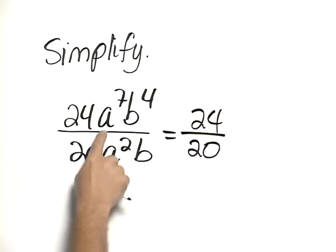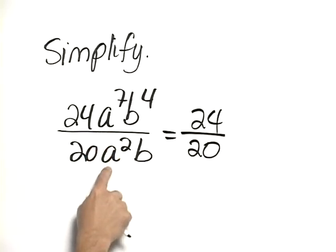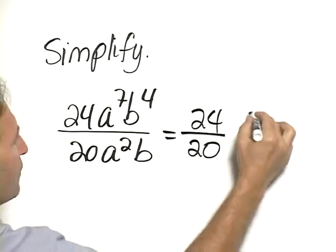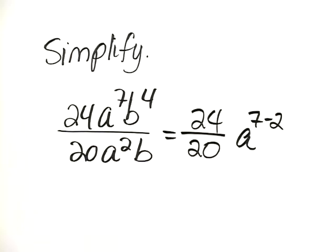And now, we combine the a to the 7th with the a squared. When we're dividing exponential expressions of the same base, we subtract the exponents, so it would be a to the 7 minus 2.